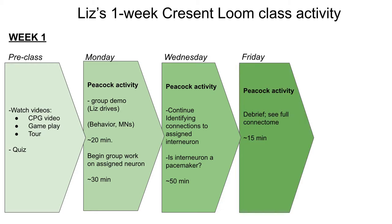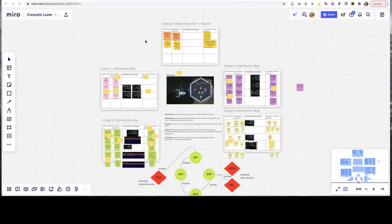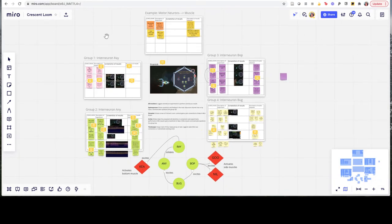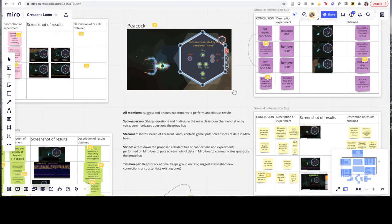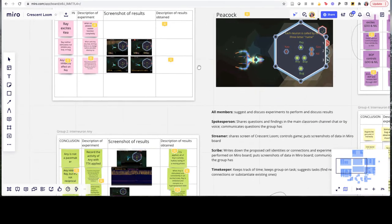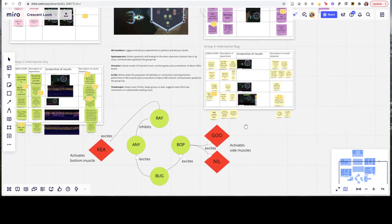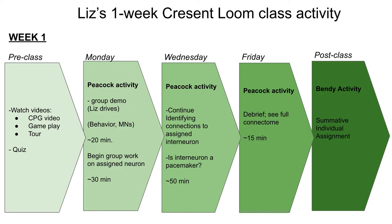On Friday, we had about 15 minutes to debrief on the results and to see the full connectome. I used a program called Miro for students to work together online. Each group of students had a table to organize their work, and each student in each group was given a role to help them contribute. I was able to leave comments on their work using the speech bubbles, and we were also able to build a circuit diagram of the CPG as we were confirming connections. While most of my class time was devoted to the Peacock activity, my students solved an activity related to the Bendy creatures as a summative individual assignment, in lieu of course exams.